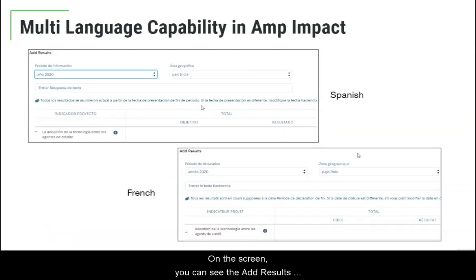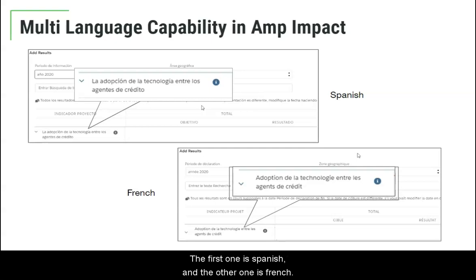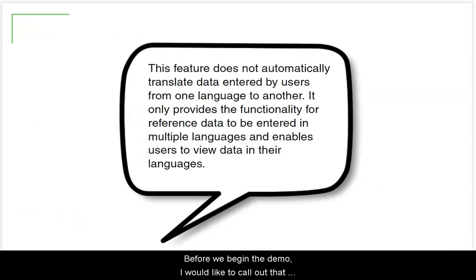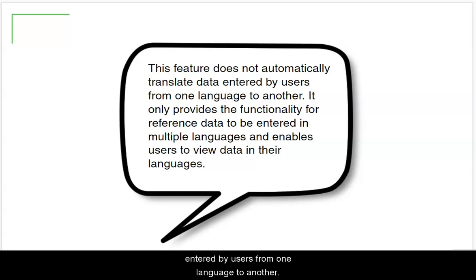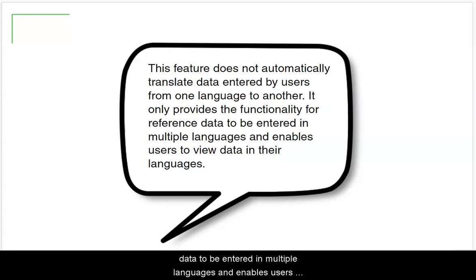On the screen you can see the Add Results page as it is displayed to two different users. The first one is Spanish and the other one is French. Before we begin the demo, I would like to call out that this feature does not automatically translate data entered by users from one language to another. It only provides the functionality for reference data to be entered in multiple languages and then enables users to view data in their own language.